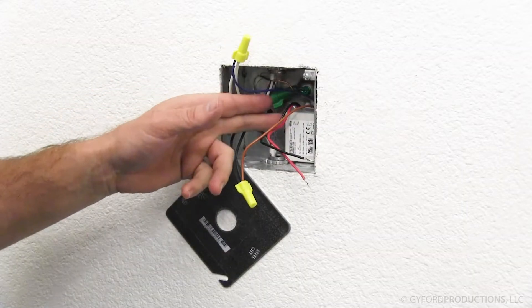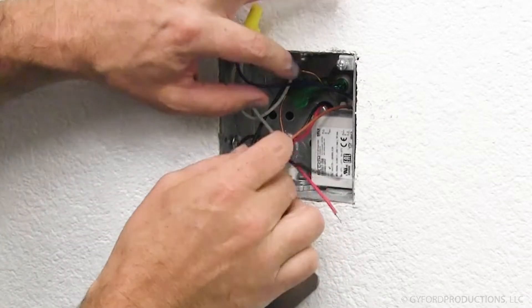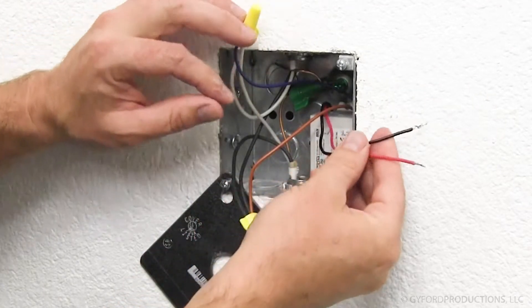Your building code may call for the power driver to be mounted in or out of a junction box. In this installation, the load and neutral wires are connected to switched power in the wall, and then we connect the output to the LED leads.